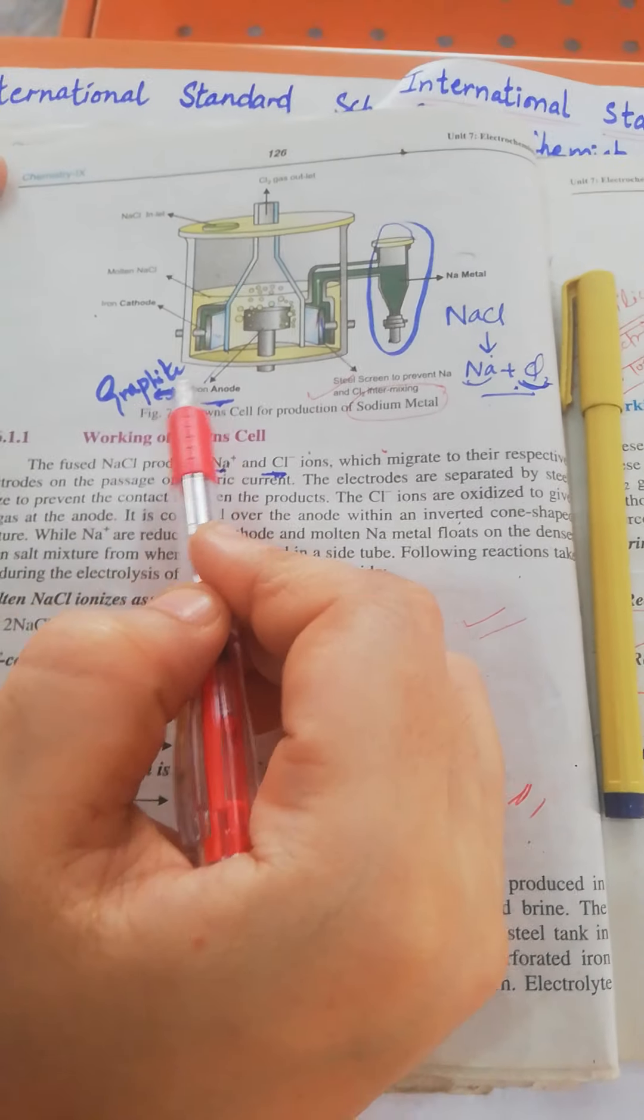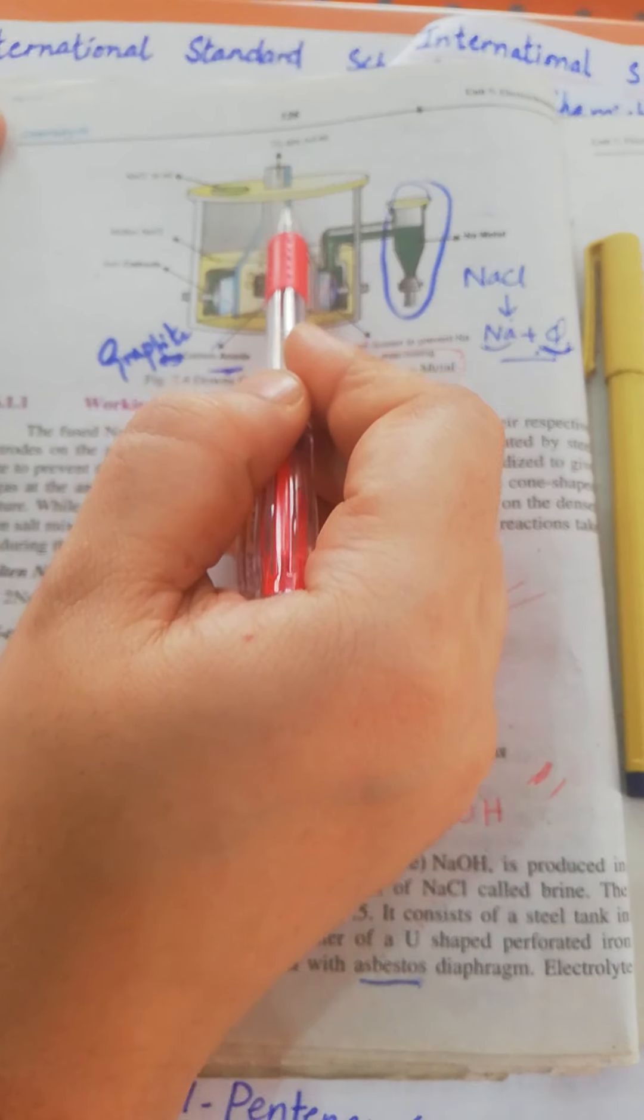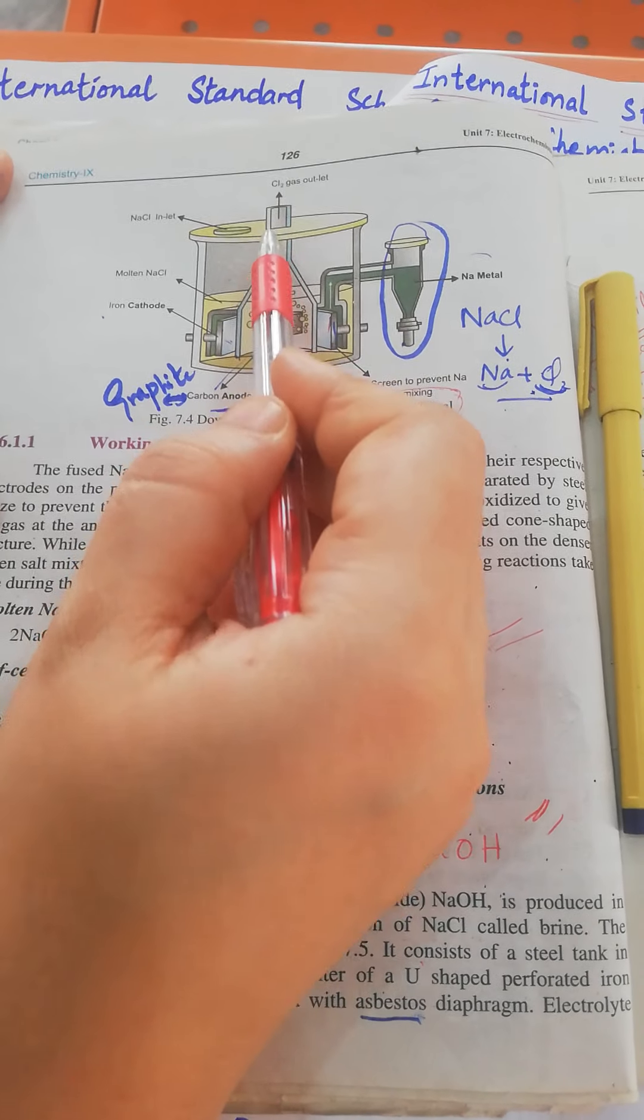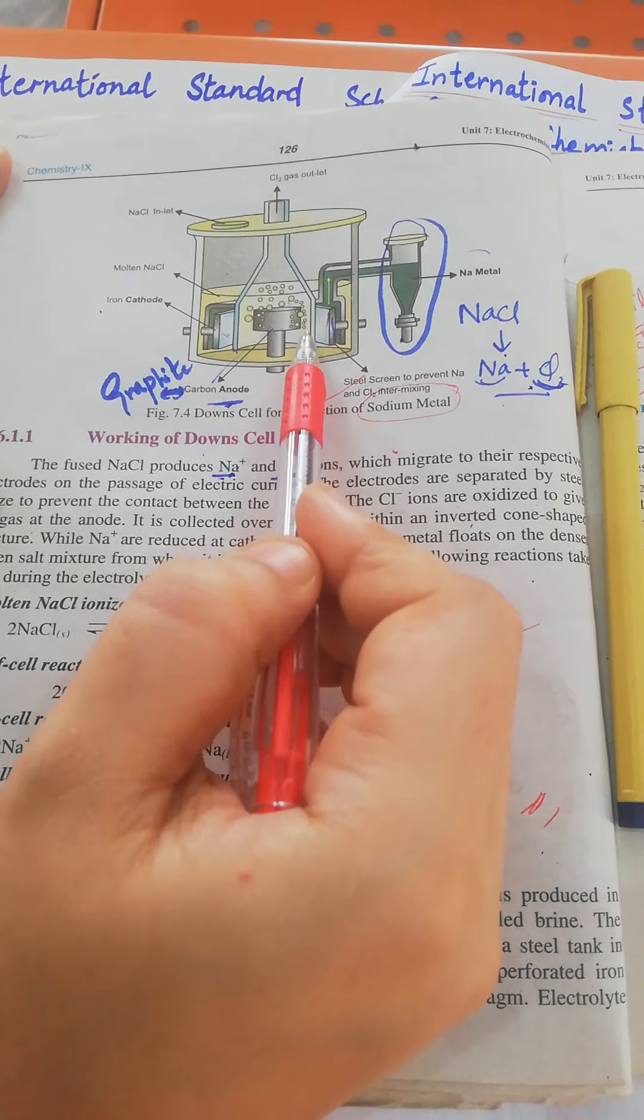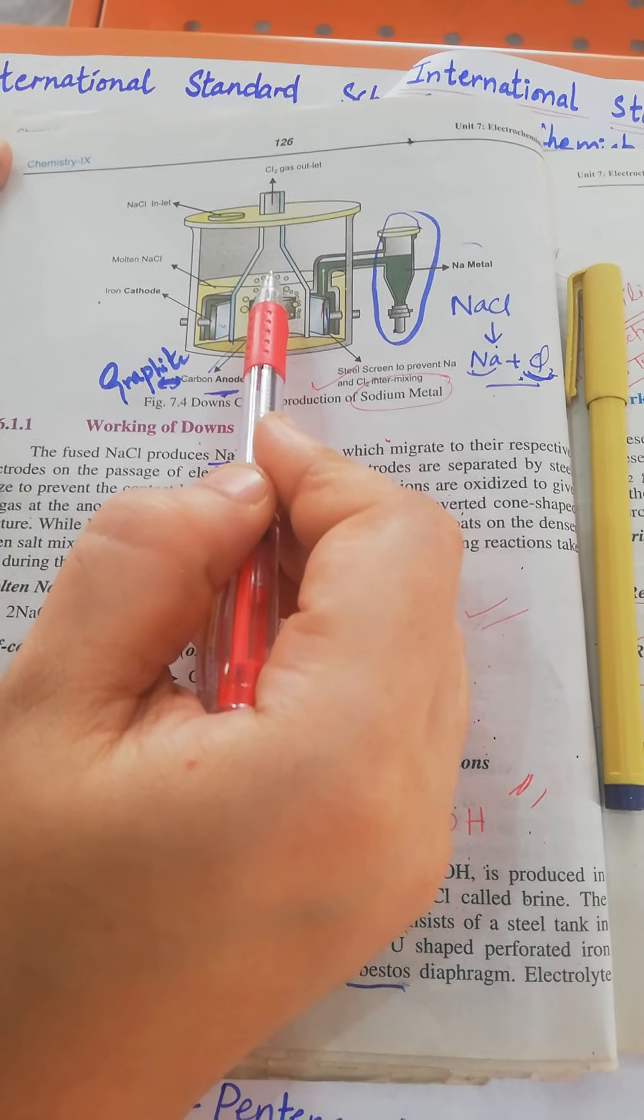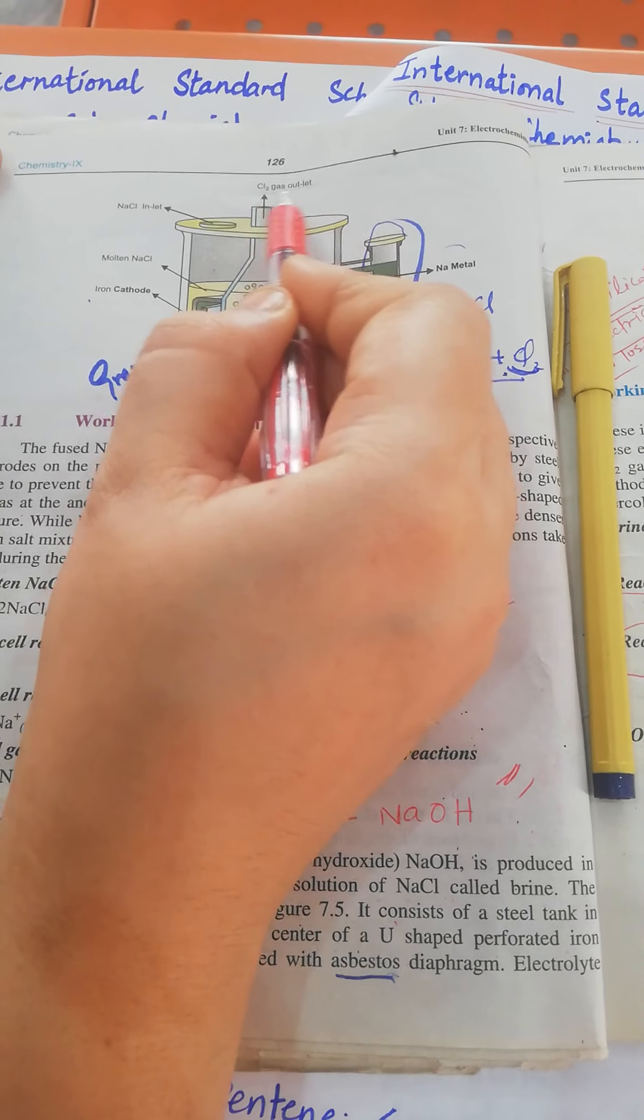The chlorine is formed at the graphite anode. There is a cone-shaped structure placed in inverted form above the anode to collect the chlorine gas that evolves. The chlorine gas is removed through an outlet.